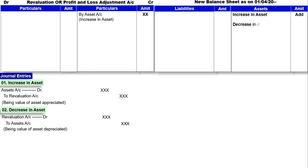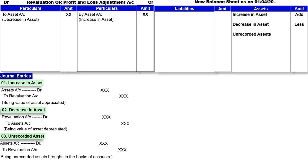Assets decrease हुई है तो new balance sheet के अंदर particular asset में less करेंगे. Asset decrease होने के वजह से loss हुआ है, तो Revaluation account के debit में लिखेंगे, to asset account. Next entry है Unrecorded asset: Asset account debit to Revaluation account. Narration: being unrecorded assets brought into the books of account. Unrecorded asset को particular asset में add करेंगे. New balance sheet के अंदर asset increase हुआ है record करने के वजह से, तो Revaluation account के credit में second effect करेंगे, by asset account.